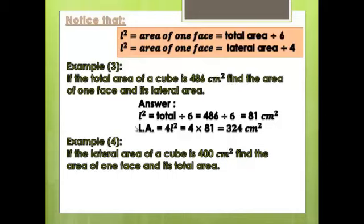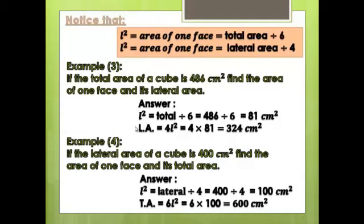Example 4: The lateral area of a cube is 400 cm². Find the area of one face and its total area. Area of one face: L² = lateral area ÷ 4 = 400 ÷ 4 = 100 cm². Total area = 6L² = 6 × 100 = 600 cm².